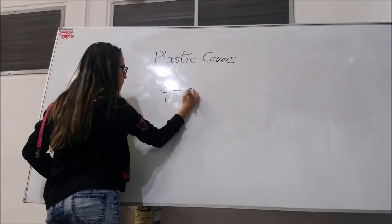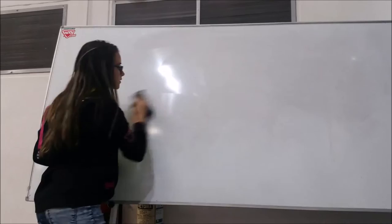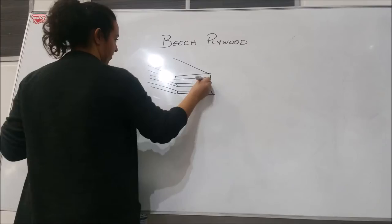Plastic covers are used for safety since they are light and cheap to produce. The desk is made of beech plywood. Plywood is made with perpendicular layers of veneers with resin in between.